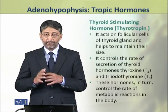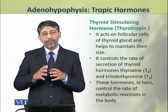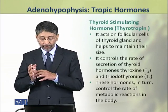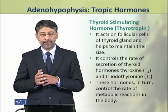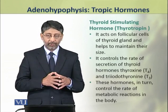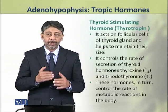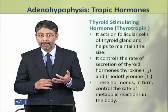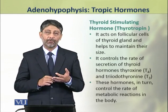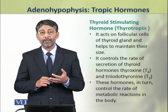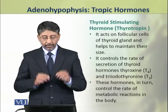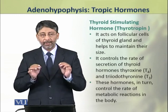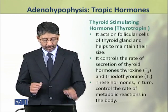TSH acts on the follicular cells of the thyroid gland and helps to maintain their size. It also controls the rate of secretion of thyroid hormones thyroxine, that is T4, and triiodothyronine, that is T3. These hormones, T3 and T4, in turn control the rate of metabolic reactions in the body.